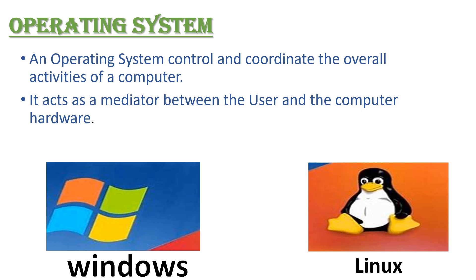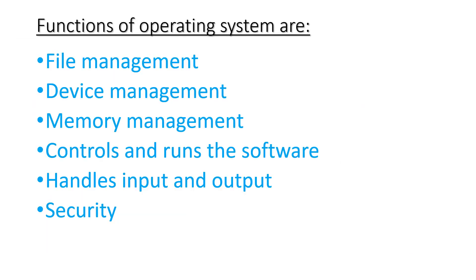There are different operating systems. Some of the popular operating systems are MS-DOS, MS-Windows and Linux. Important functions of the operating system are file management, device management, memory management, controls and runs the software, handles input and output, and security.